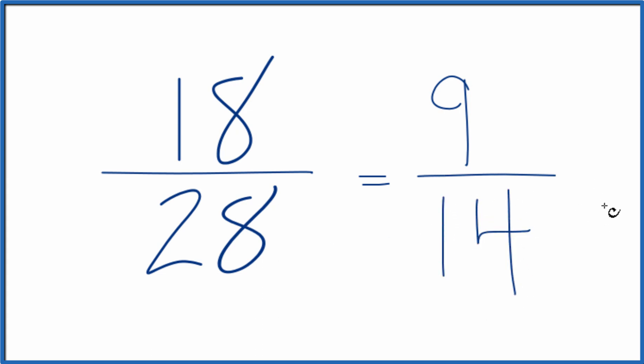And now, we really can't find any other factors that'll go evenly into both 9 and 14. So we've simplified the fraction 18/28. These are equivalent, 18 divided by 28, or 9 divided by 14, you'll get the same decimal answer. It's just that we've reduced 18/28 down to 9/14. We can't reduce that any further. Our greatest common factor here was 2.